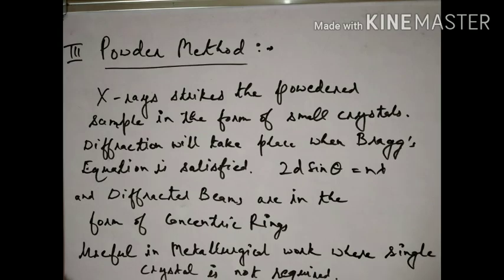In summary, the powder method works as follows: X-rays strike the powdered sample (in the form of small crystals). Diffraction takes place when Bragg's equation is satisfied. With d and theta both varying, and lambda fixed, when 2d sin θ = nλ is satisfied, we get diffracted beams in the form of concentric rings. This method is particularly useful in metallurgical processes, because in metallurgy single crystals are not required, so the powder method is used there.